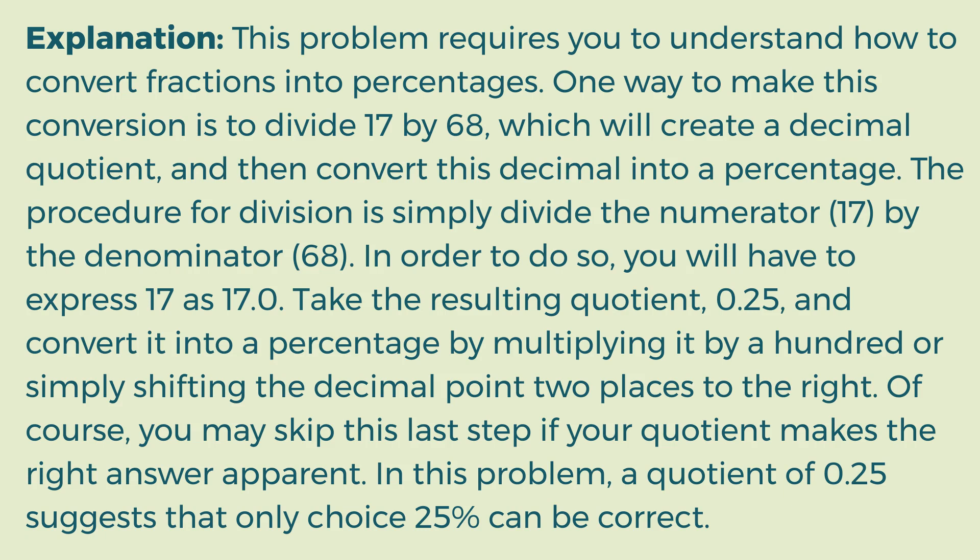Take the resulting quotient, 0.25, and convert it into a percentage by multiplying it by a hundred, or simply shifting the decimal point two places to the right. Of course, you may skip this last step if your quotient makes the right answer apparent. In this problem, a quotient of 0.25 suggests that only choice 25% can be correct.